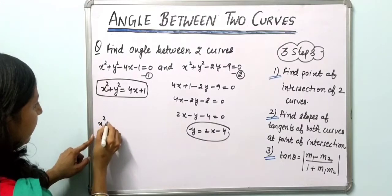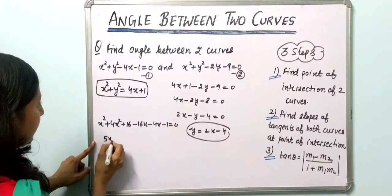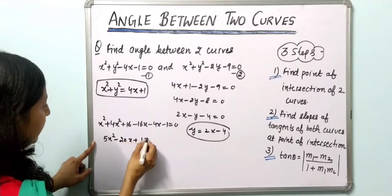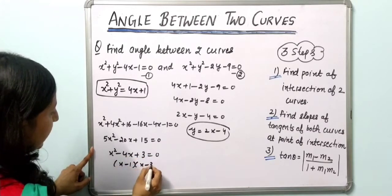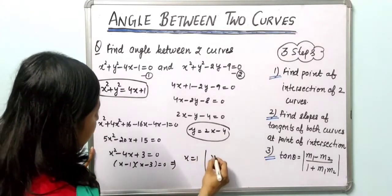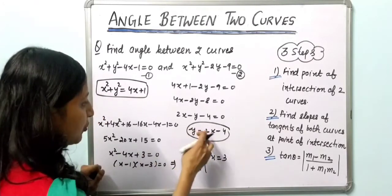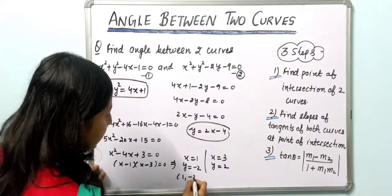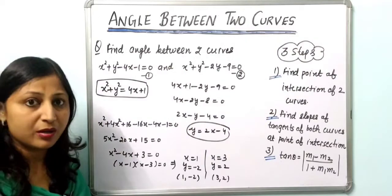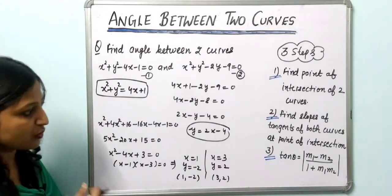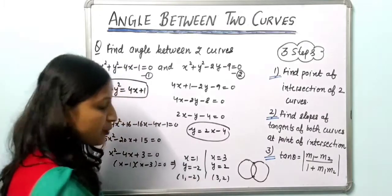Substituting y = 2x − 4 into the first equation gives x² + (2x−4)² − 4x − 1 = 0, which expands to 5x² − 20x + 15 = 0, or x² − 4x + 3 = 0. Factoring: (x−1)(x−3) = 0, so x = 1 and x = 3. When x = 1, y = −2; when x = 3, y = 2. So the two points of intersection are (1, −2) and (3, 2). These are two circles with two points of intersection.